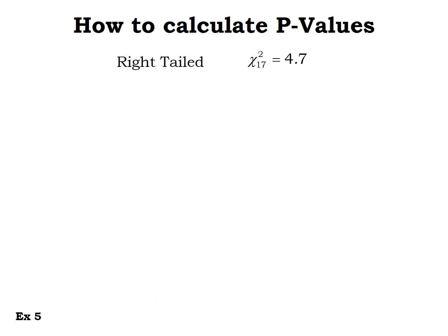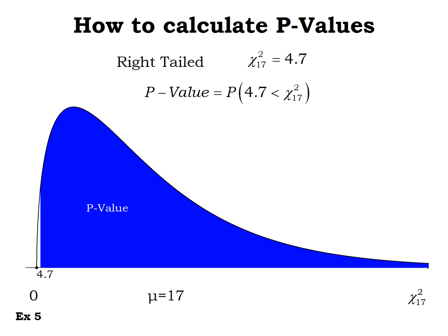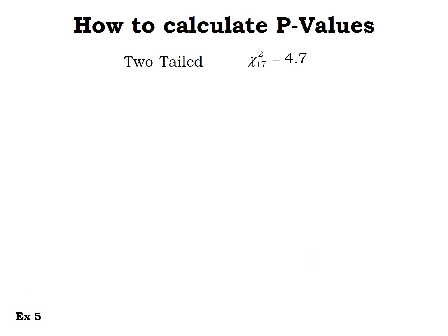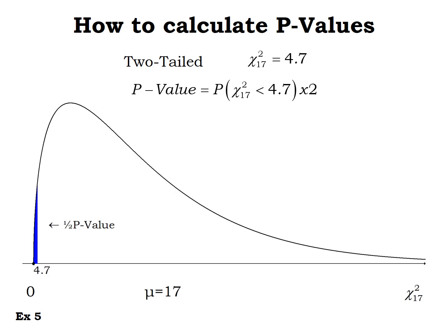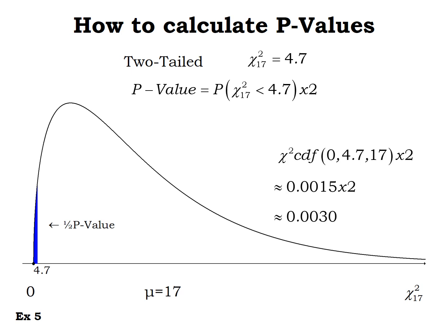For a right-tailed test with chi-squared score 4.7, we want everything to the right of 4.7. Using chi-squared CDF from 4.7 to infinity, the p-value is 0.9985. For a two-tailed test with the same statistic, since it's in the left tail, we find the area to the left as if it were a left-tailed test and double it. The area to the left is 0.0015, so the two-tailed p-value is approximately 0.0030.